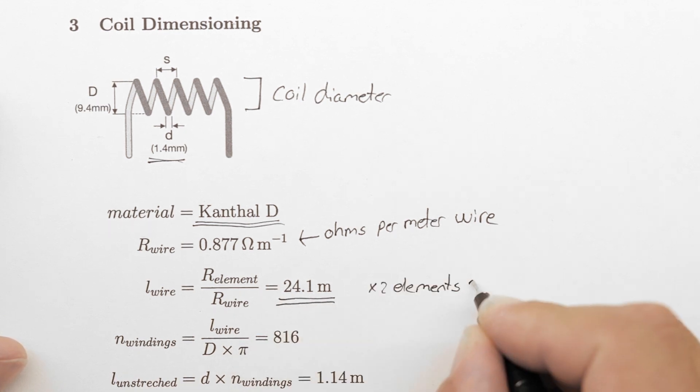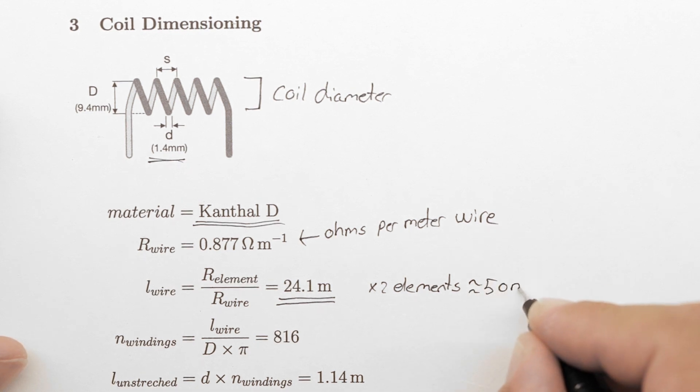This is great as the supplier sells the kanthal wire in length of 50 meters, just enough to make the two elements.